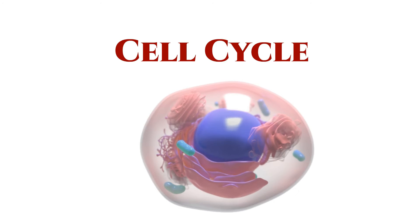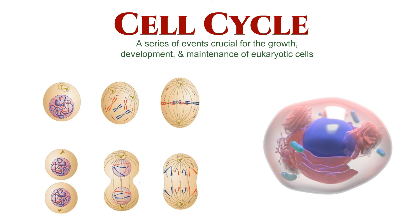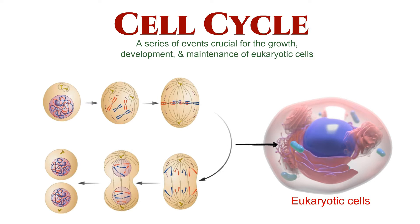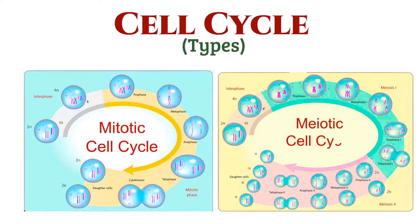Let's delve into the fascinating world of the cell cycle, a series of events crucial for the growth, development, and maintenance of eukaryotic cells. Join us as we explore the two main types of cell cycles, the mitotic cell cycle, also known as the somatic cell cycle, and the meiotic cell cycle, which plays a vital role in sexual reproduction.